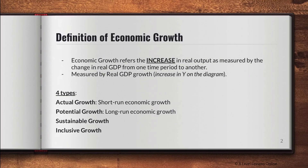So what is the definition of economic growth? Economic growth refers to an increase in real output as measured by the change in real GDP from one time period to another. On your AD-AS diagram, a change in real GDP — whether an increase or decrease — means a change in national income and national output. This could mean negative growth, positive growth, slowing growth, or rapidly rising growth. It is measured by real GDP growth.